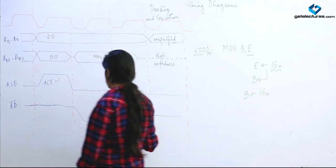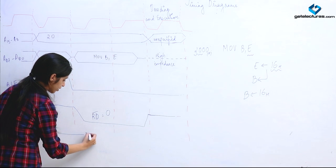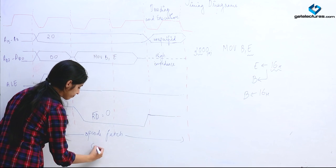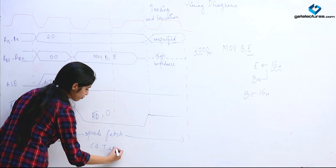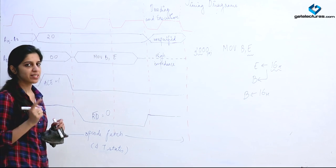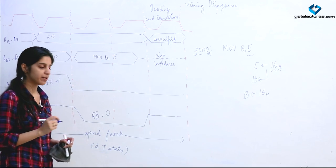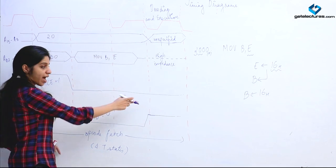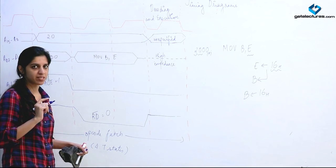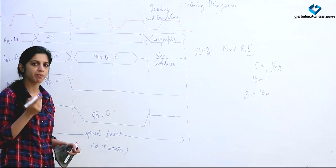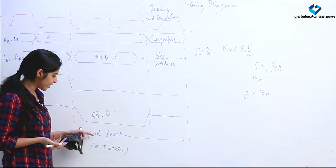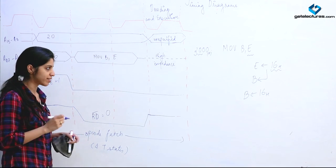So MOV B, E takes a total of 4 T-states. Only opcode fetch was needed, and opcode fetch requires 4 T-states. Note that machine cycle and clock cycle are different: what we count here are T-states (clock cycles). A machine cycle such as opcode fetch, memory read, or memory write may consist of a variable number of T-states. One machine cycle of opcode fetch is 4 T-states.